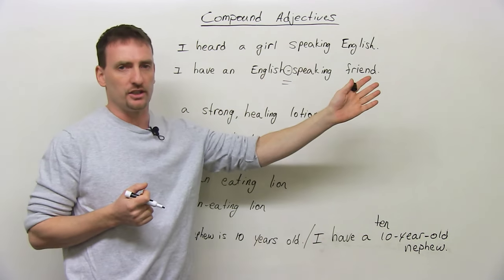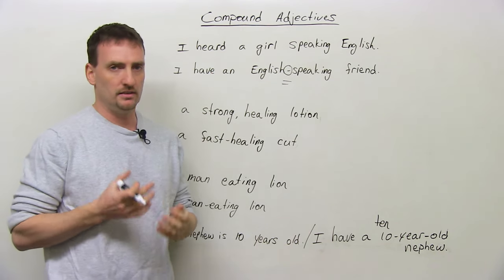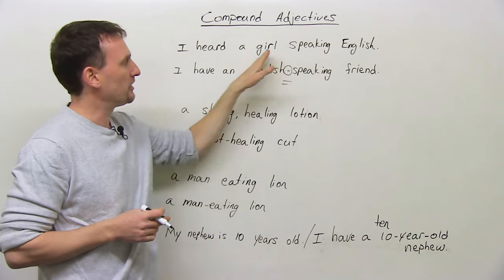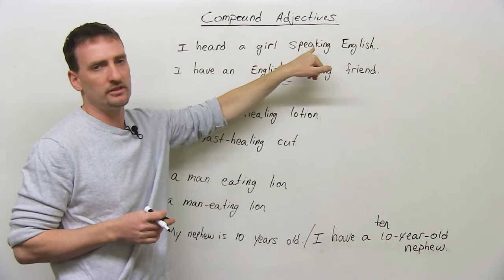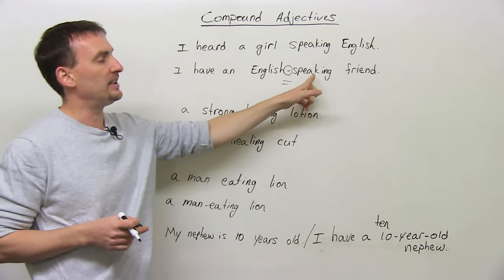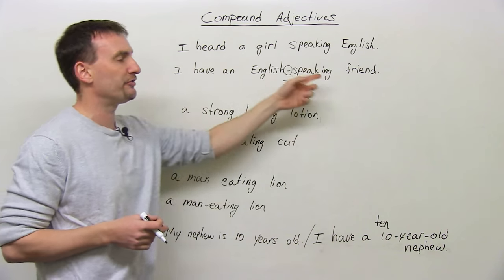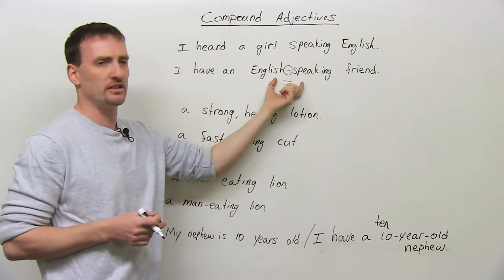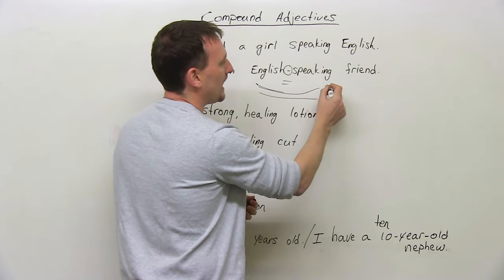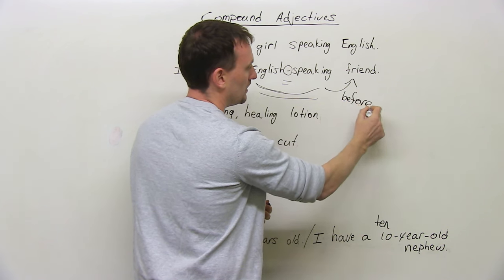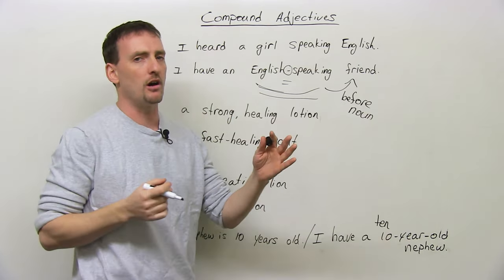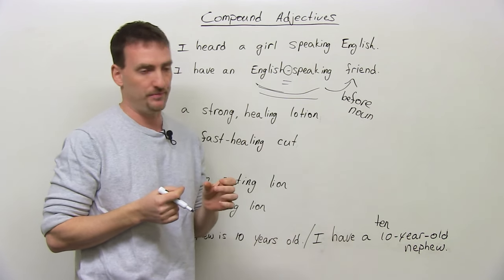Consider: 'I heard a girl speaking English' versus 'I have an English-speaking friend.' In the first, 'speaking English' comes after the girl and describes what she is doing. In the second, 'English-speaking' is a compound adjective before the noun 'friend,' meaning a friend who speaks English. A compound adjective always comes before a noun. If it comes after, there's no longer a need for the hyphen.